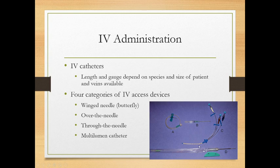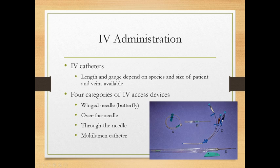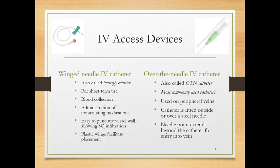The multi-lumen catheter is placed into the skin and the hub is taped in place, giving us two or three separate ports for medications that cannot be mixed until they're in the body. 'Lumen' means tube or opening. To review: the winged or butterfly needle catheter is for short-term use, often for blood collection in cats or non-irritating medications, but it's easy to puncture the vessel wall and cause sub-Q infiltration. The plastic wings help hold it in place.